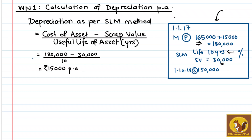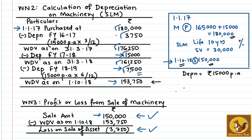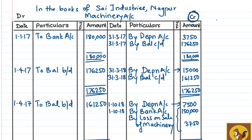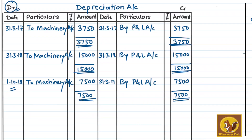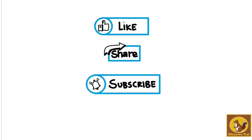In this sum, we first calculated the depreciation amount per annum using the SLM formula — cost of asset minus scrap value divided by useful life. Then we calculated depreciation for 3 years and found the profit or loss from the sale of the asset. We prepared the machinery account and depreciation account for 3 years. This is question 2 of practical problems. If you find this video useful, please like, share with your friends, and subscribe for future notifications.